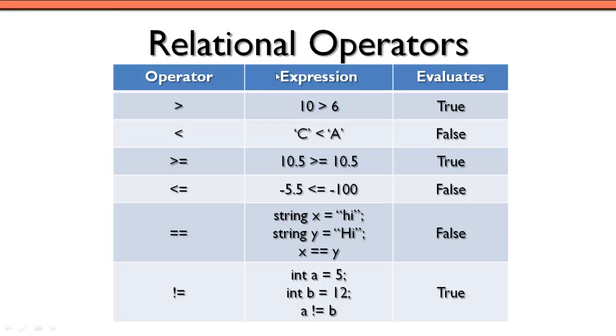So that's basically it. We have six relational operators, and we can use them with various types of operands. We can use them with the numeric data types, so we've seen the int, we've seen the double, we can use them with character types, we can also use them with string types, and we'll see that we can also use them with other data types as well that we haven't talked about just yet.